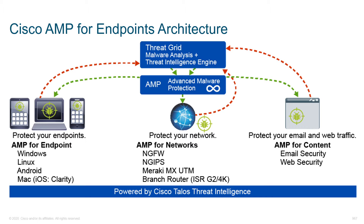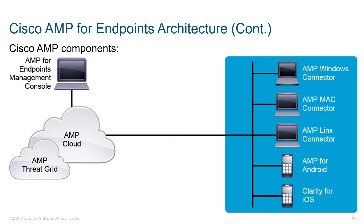As we work through this section, we'll take a look at some of the things that Cisco has to offer within the cloud. When we look at setting up Cisco AMP for endpoints, what we're basically doing is installing an agent that we call a connector onto the endpoint.